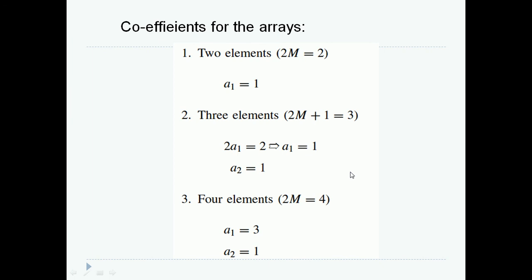Let us see some examples for feeding the coefficient arrays for a linear and a non-linear arrays. First, let us take two elements for which in the previous class we have learned that total number of arrays for an even array would be 2m is equal to 2. Since my array is 2, even array is equal to 2, I would feed both the elements equal to 1.